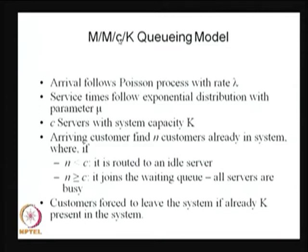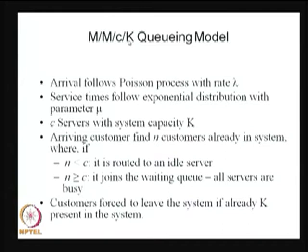If the system is full — that means C customers are under service and K minus C customers are waiting in the queue — then whoever comes will be rejected and forced to leave the system. Therefore you have both waiting and blocking because it is a finite capacity system. We always choose K such that K is greater than or equal to C. If K equals C then it is a lost system; if K is greater than C then K minus C customers maximum can wait in the queue.